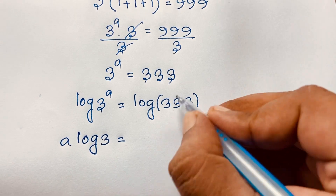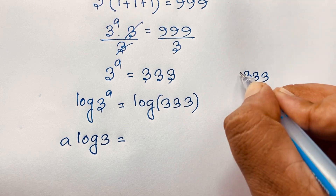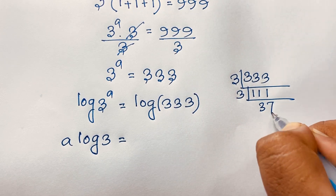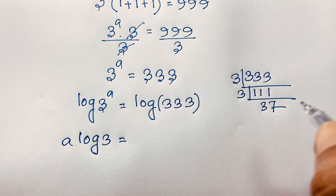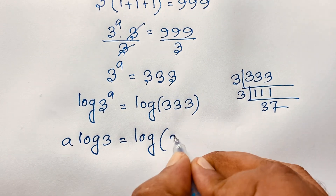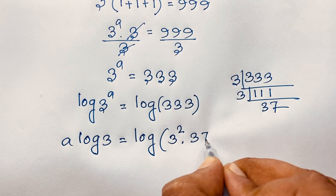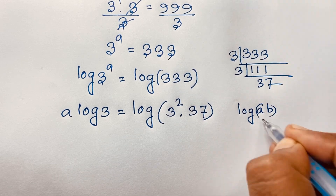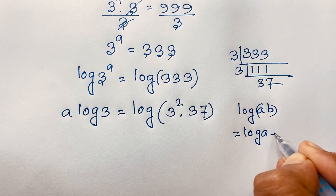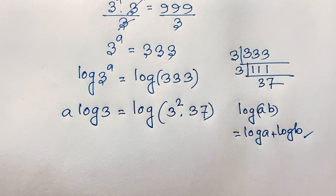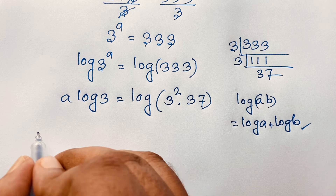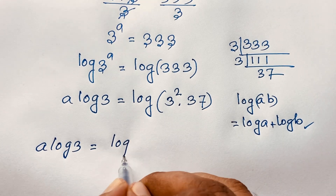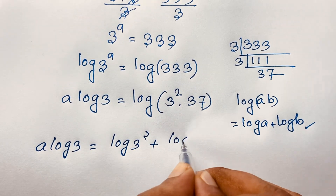Now if I simplify and find the factors of 333, it will be 3 times 3 times 37. Dividing by 3 gives 1, then dividing again by 3 gives 37. So 333 equals 3 squared times 37. Applying the log product rule — log(a·b) equals log a plus log b — we get a log 3 is equal to log(3 to the power 2) plus log 37.